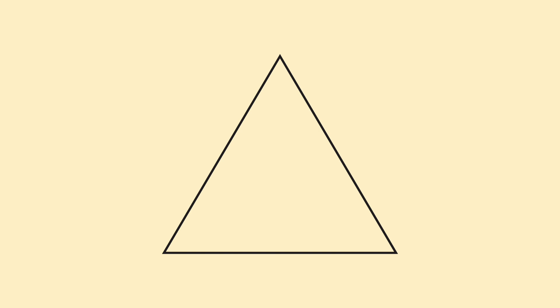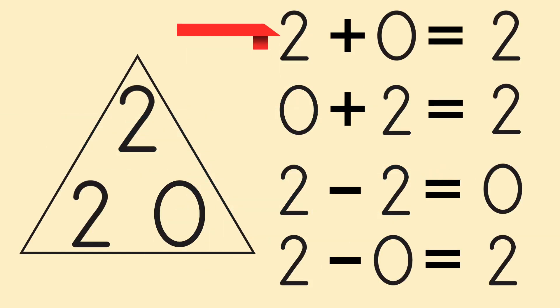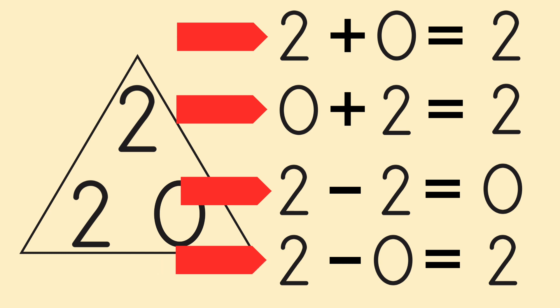And with the fact family 2, 2, 0, we get four sentences. 2 plus 0 equals 2. 0 plus 2 equals 2. 2 minus 2 equals 0. And 2 minus 0 equals 2.